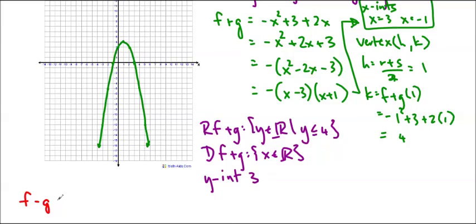So f minus g, we just take the f function, which is negative x squared plus 3. And we subtract off g of x, which is 2x, so minus 2x. And there you have it. That's what f minus g is. And we just use the algebra.